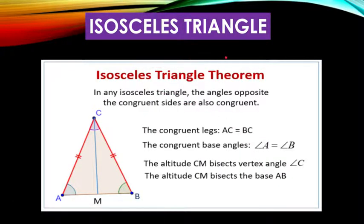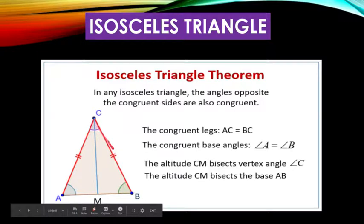If we have isosceles triangles, we have the isosceles triangle theorem. In any isosceles triangle, the angles opposite the congruent sides are also congruent. We have congruent legs, AC and BC. They are congruent. Next, they have also congruent base angles.